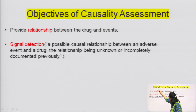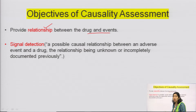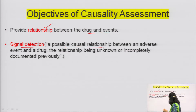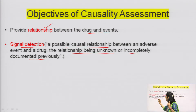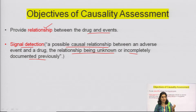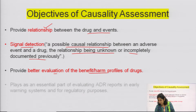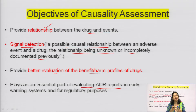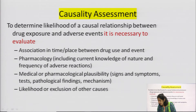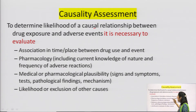The objective of causality assessment is to provide the relationship between drug and event. If a particular relationship is developed, it means a signal has been detected — a possible causal relationship between an adverse event and a drug that was not previously known. Causality assessment also provides better evaluation of the benefit-harm profile of the drug and plays an essential part in evaluating ADR reports received at pharmacovigilance centres.